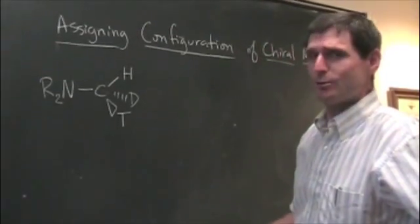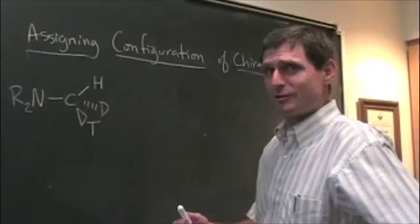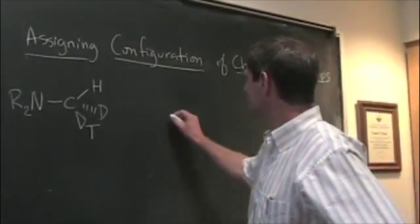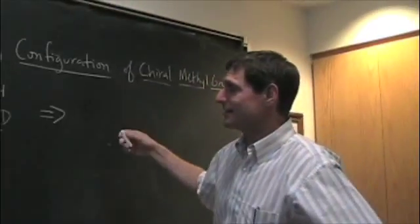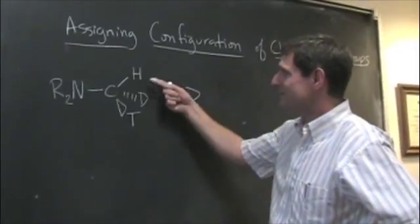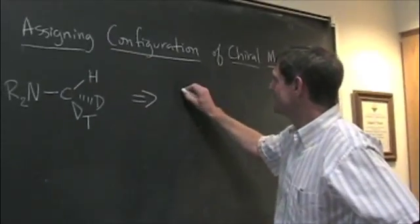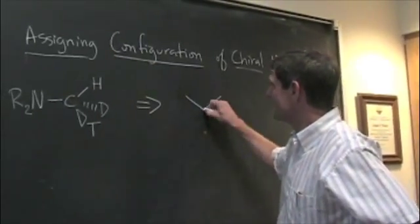And so what do we do? We have to put the group of lowest priority behind in a Newman projection and then assign priority. Carbon looks like it's the hydrogen, so the hydrogen is going to be kind of lurking behind.